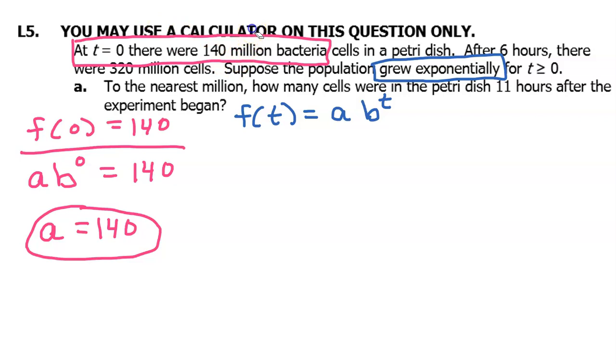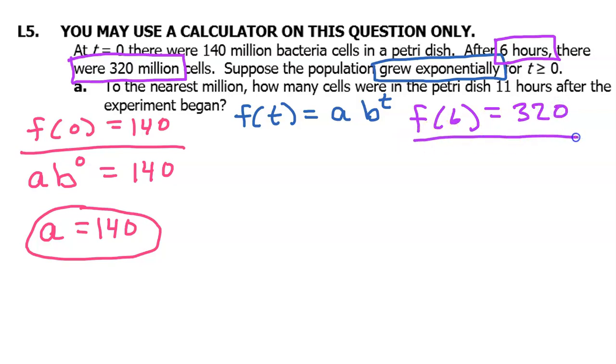We have another initial condition that we can use to find something else. In other words, if we substitute 6 in for t, the answer should be 320. So here we go. a times b to the 6th power should equal 320. But guess what? We already know what a is. So let's substitute that in. So we have 140 times b to the 6th power is equal to 320.